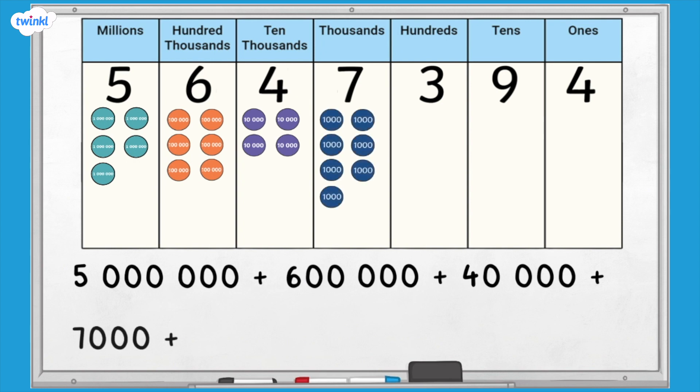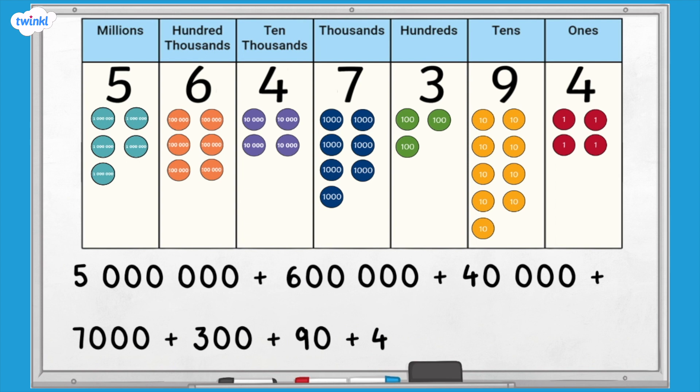In the thousands column, we have 7. 7 thousands is 7,000, so this digit has a value of 7,000. In the hundreds column, we have 3. Three hundreds is 300, so this digit has a value of 300. In the tens column, we have 9. 9 tens is 90, so this digit has a value of 90. In the ones column, we have 4. 4 ones is 4, so this digit has a value of 4.